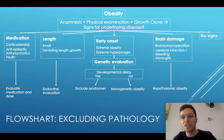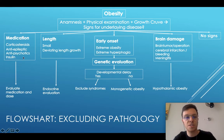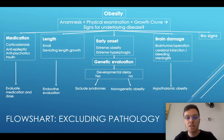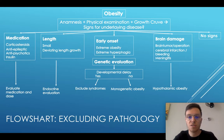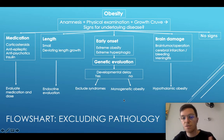The last topic is a flowchart to exclude any pathology when dealing with a child with obesity. You take the anamnesis, physical exam, and look at the growth curve for any signs of underlying disease. Look at the medication — is the child taking corticosteroids, antiepileptics, antipsychotics, or insulin? If so, evaluate whether the dose could be causing the obesity and adapt it. Then look at the length: if the child is too small or there is deviant length growth, evaluate the endocrine functions. If obesity is of very early onset within the first year and is extreme with hyperphagia, do a genetic evaluation. If there are developmental delays, exclude a syndrome; if there aren't, look for monogenetic obesity.